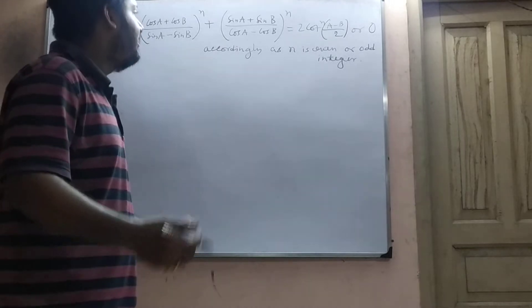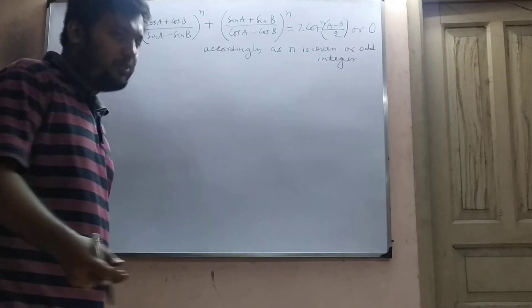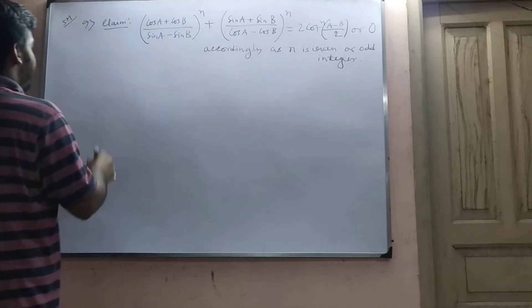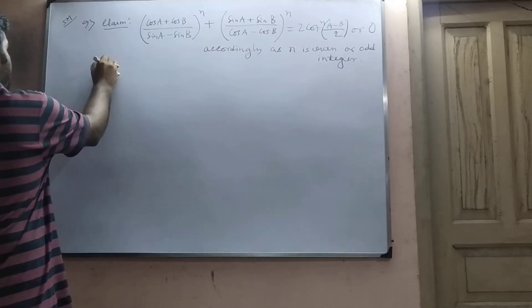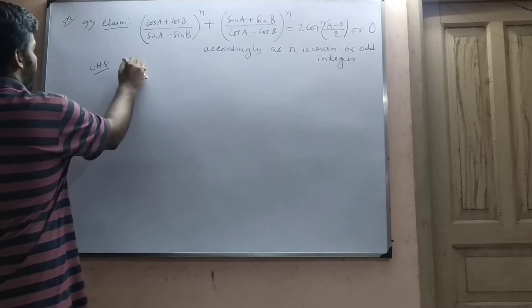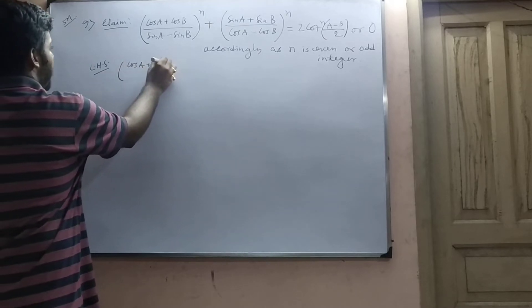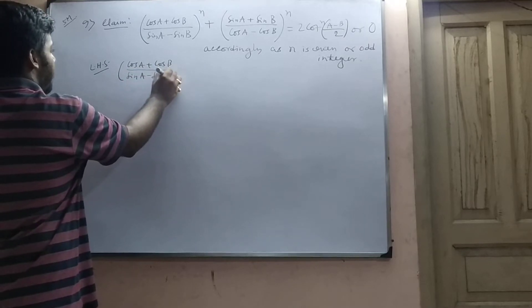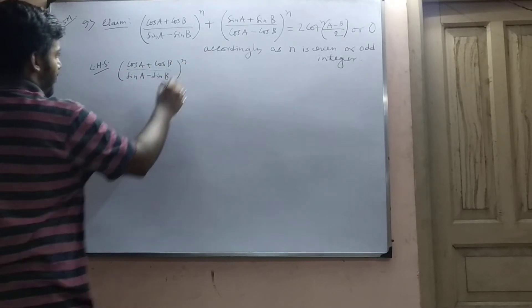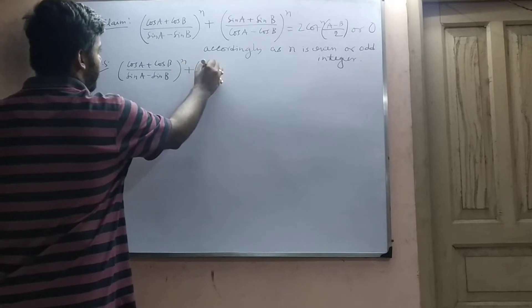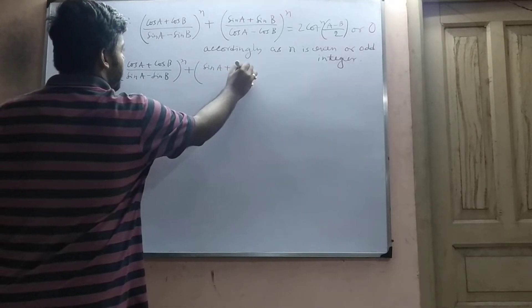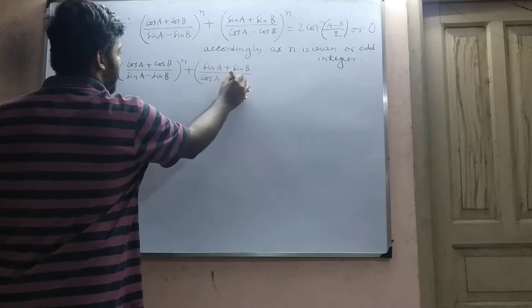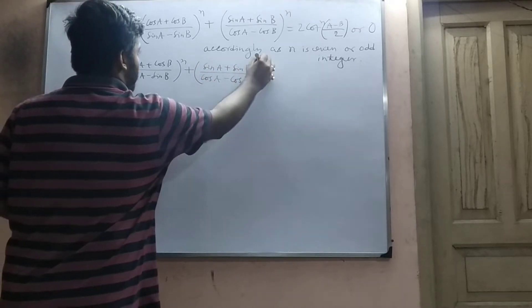N is even means N is an even integer. N is odd means N is an odd integer. First, what is your left-hand side? Your left-hand side is cos A plus cos B over sin A minus sin B, whole to the power N, plus sin A plus sin B over cos A minus cos B, whole to the power N.